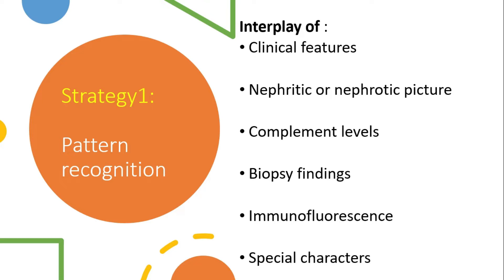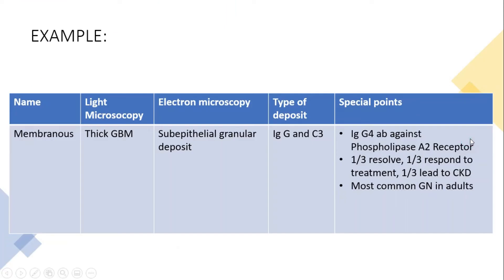In order to master these questions, the first and foremost strategy is pattern recognition. These questions involve a complex interplay of clinical features — the nephritic or nephrotic picture, complement levels, biopsy findings, immunofluorescence, and any special characteristics. I have made a tabular form for membranous nephropathy as an example. You can prepare all other glomerulonephritides in a similar pattern — this is extremely important to correctly answer these questions in the MRCP exam.